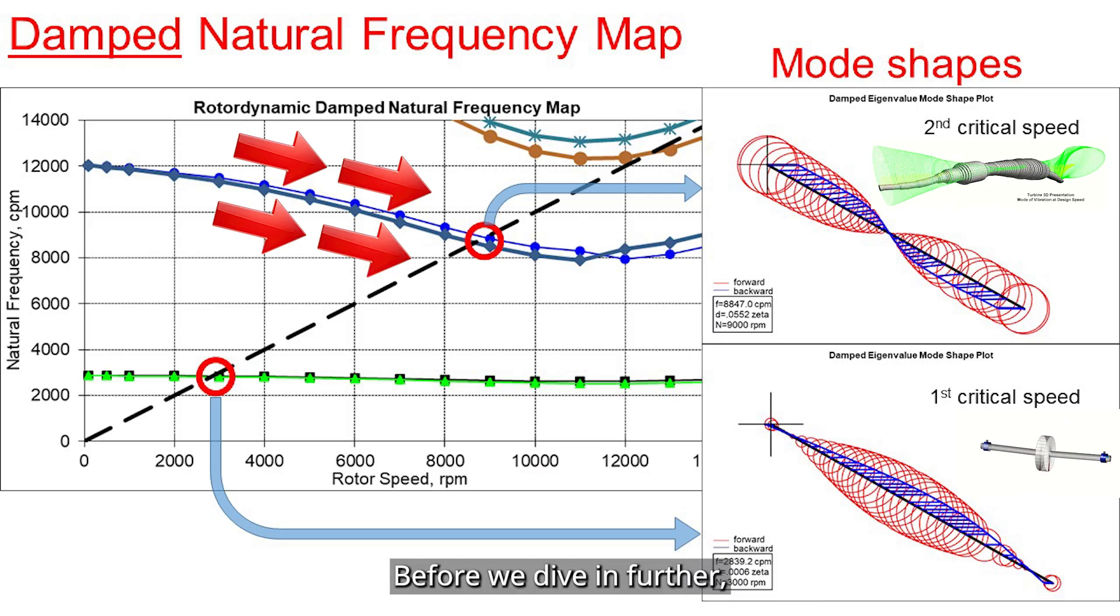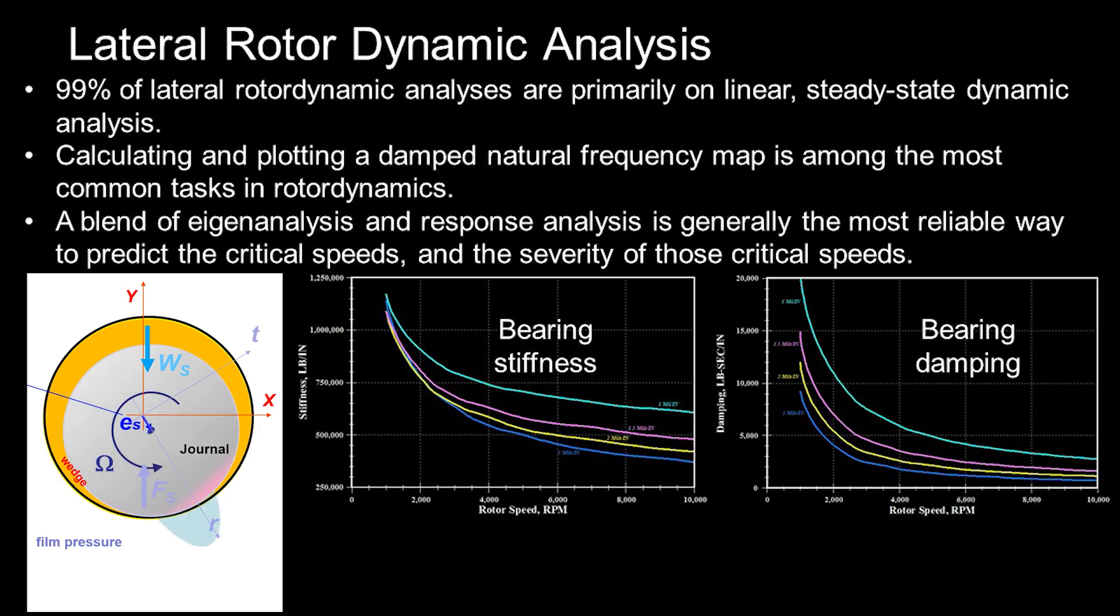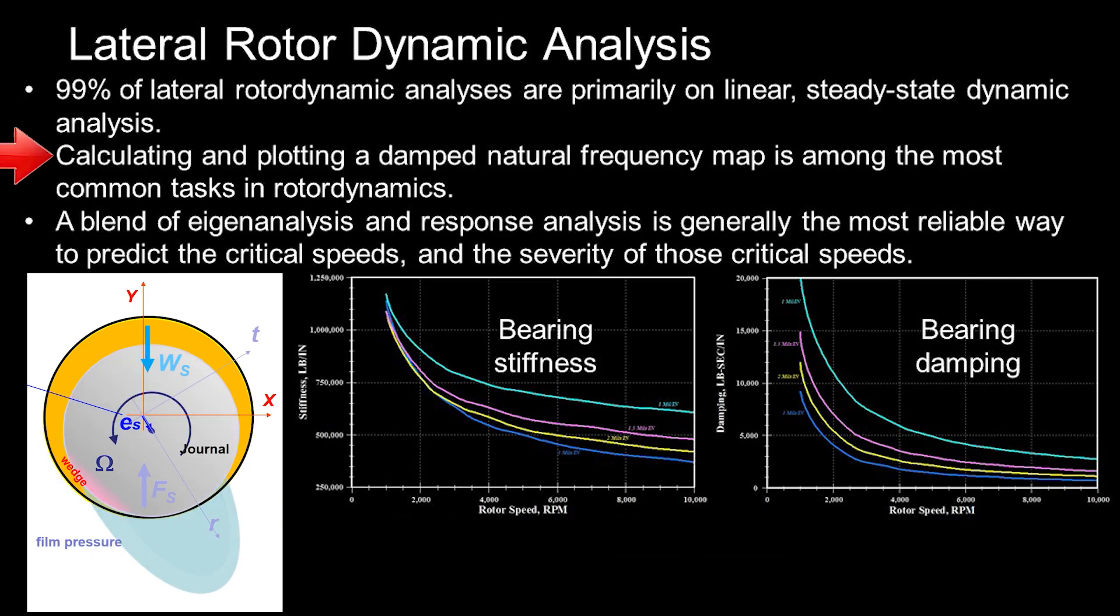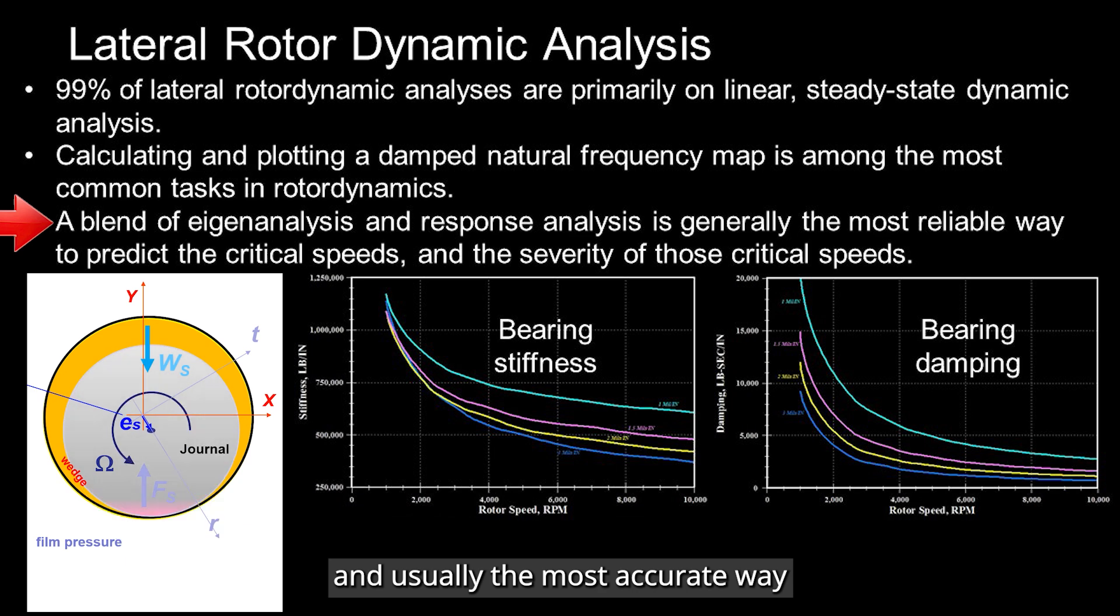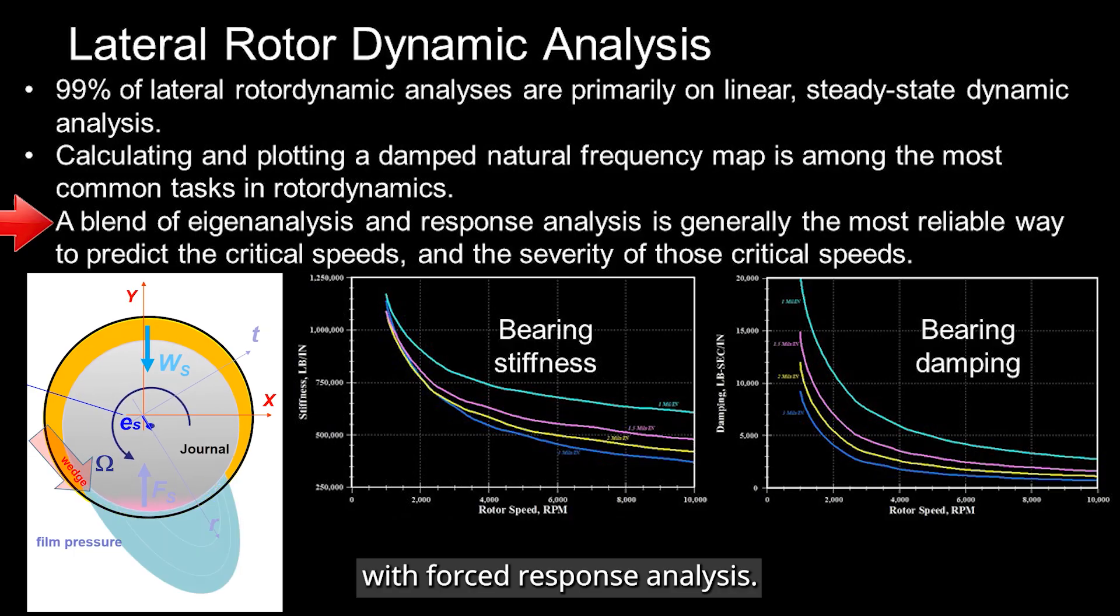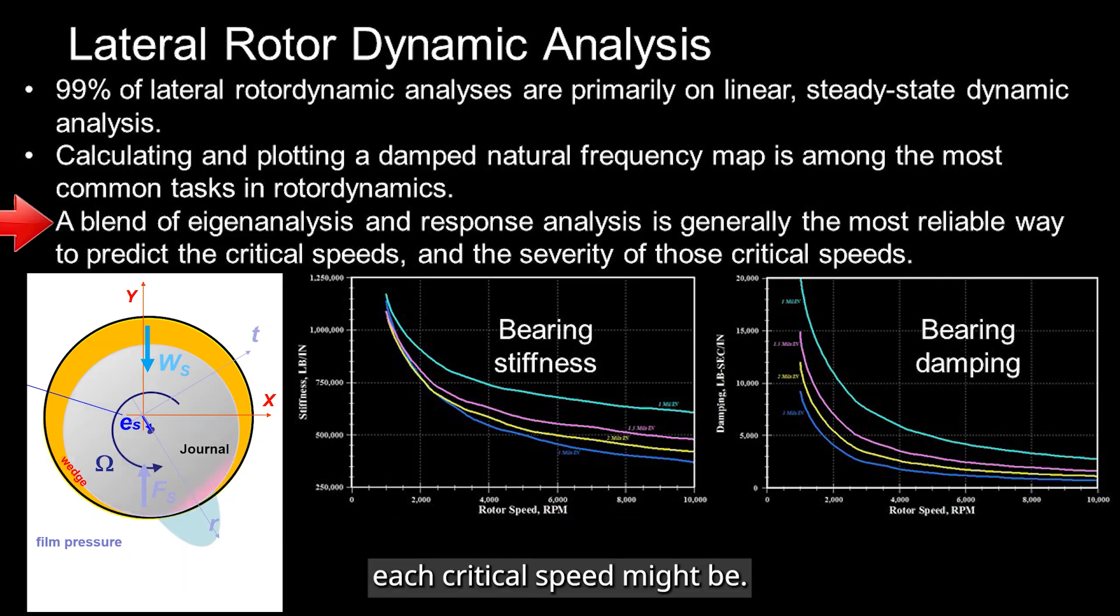Before we dive in further, let me just highlight a few key takeaways. In the industry, most of the lateral rotor dynamic analysis is linear and steady state. And plotting a damped natural frequency map is a very common task. And usually, the most accurate way to understand critical speed is to combine eigenanalysis with forced response analysis. That combination gives you a much better picture of how serious each critical speed might be.